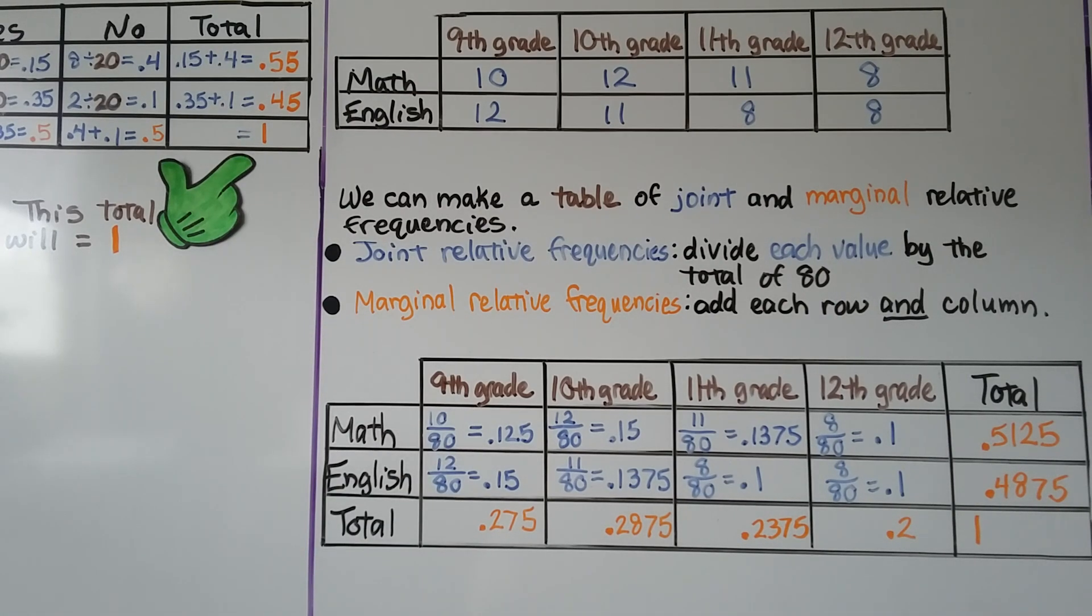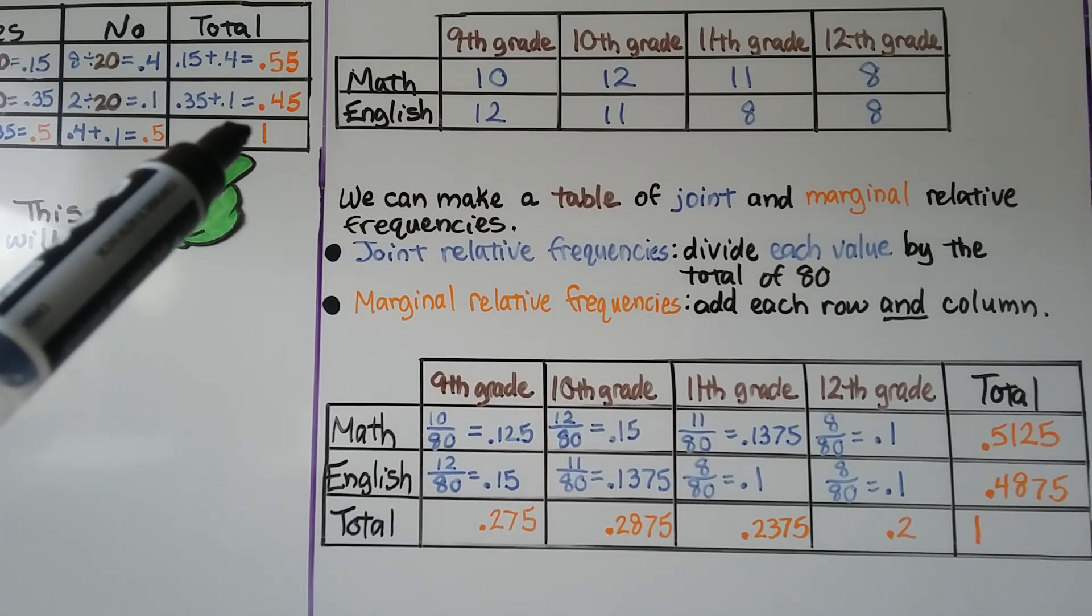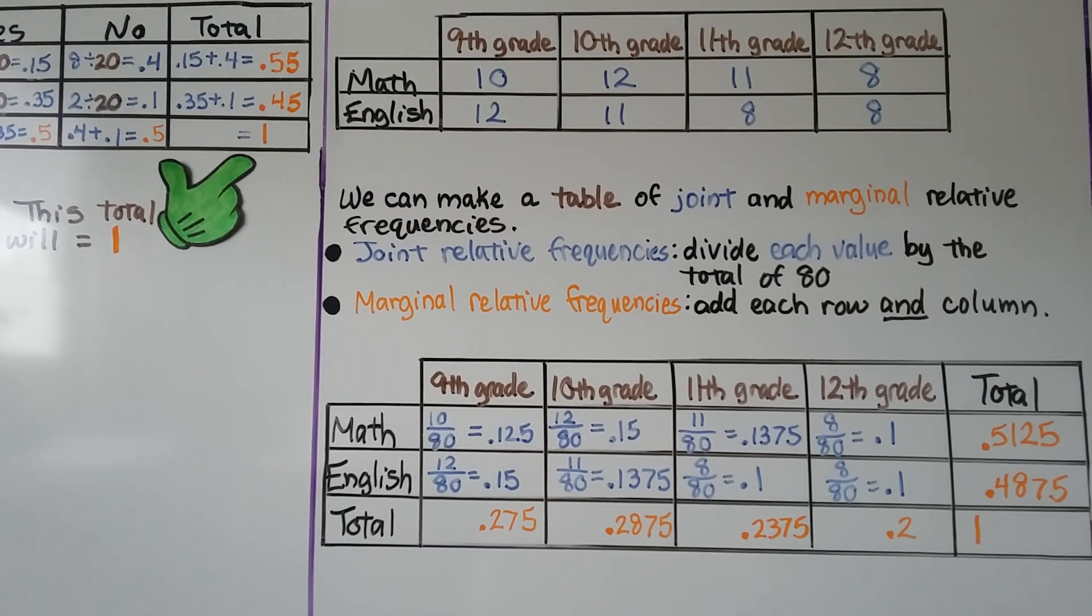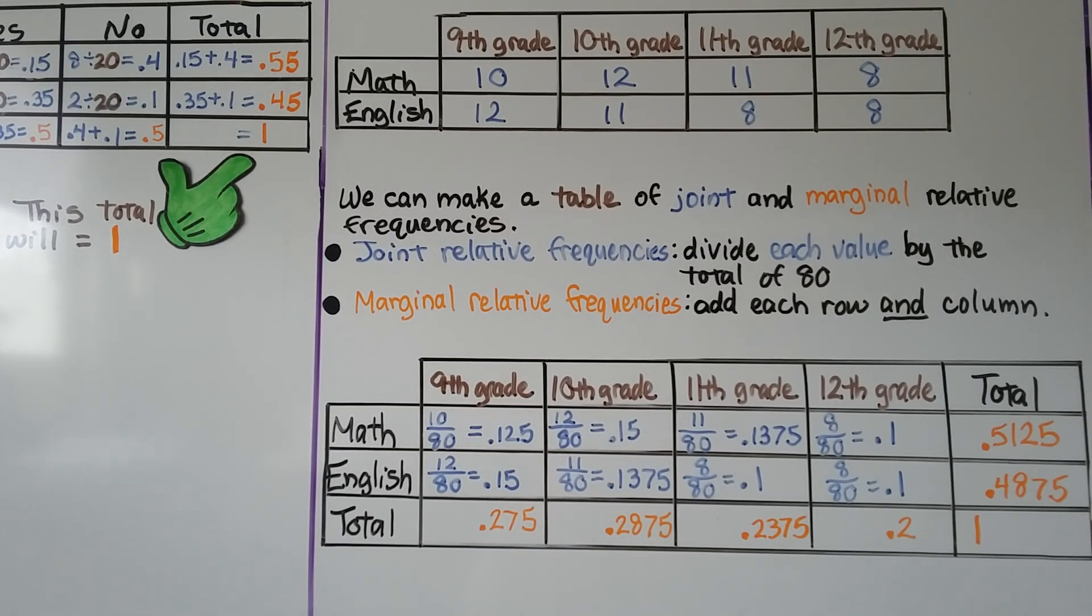For the marginal relative frequencies we add up these rows and columns, and remember this box down here should be a 1. It should total a 1. That 1 represents 100 percent of the people asked.